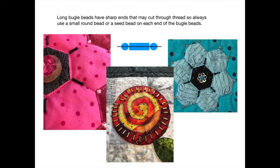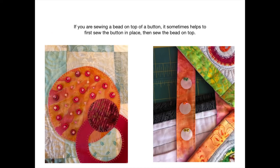Long bugle beads have sharp ends — they may cut through thread. So always use a small round bead on either end of your bugle bead. You can use a seed bead too, but we want one on each end of the bugle bead. If you're sewing a bead on top of a button, it sometimes helps to first sew the button in place, then sew the bead on top.